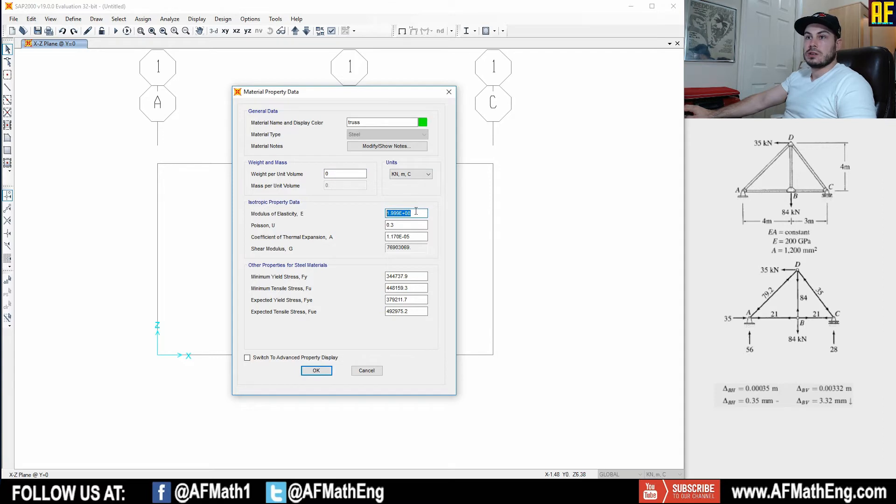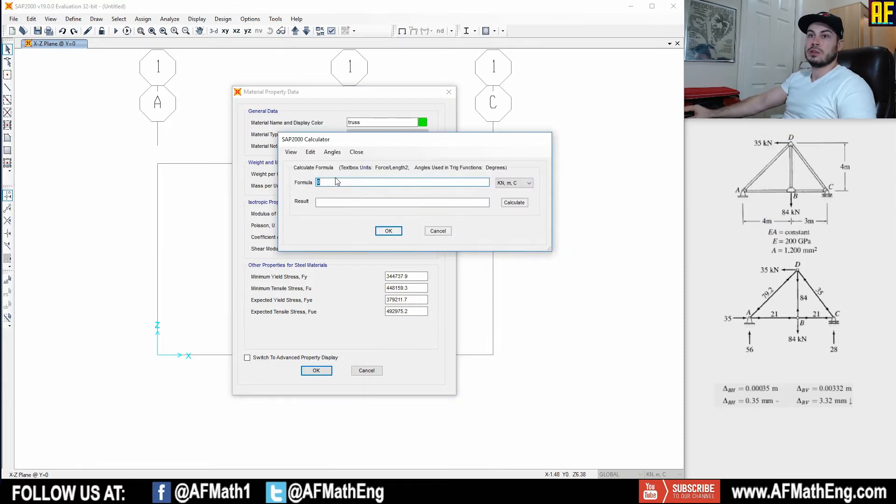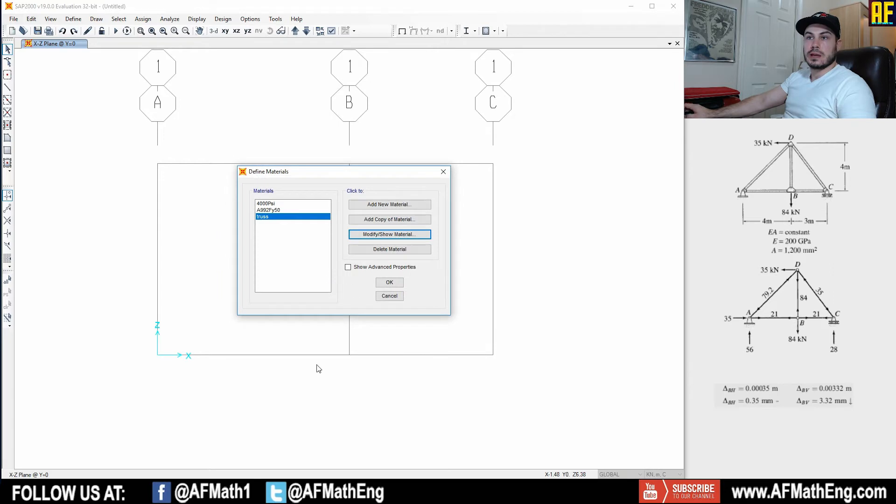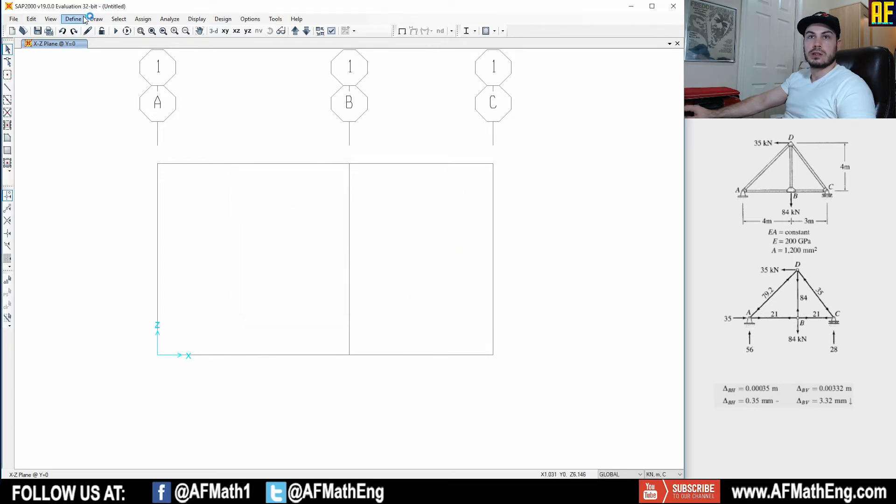Modulus elasticity is going to be, we have 200 GPA over here. So 2E08. And like I said before, if you're not sure what it is in those units, you can always do the shift double click, bring the calculator up and input the GPA in the units that you would like. So that's good to know. What else do we have here? That's it. That's everything for this page. Let's press okay. Our material is defined.